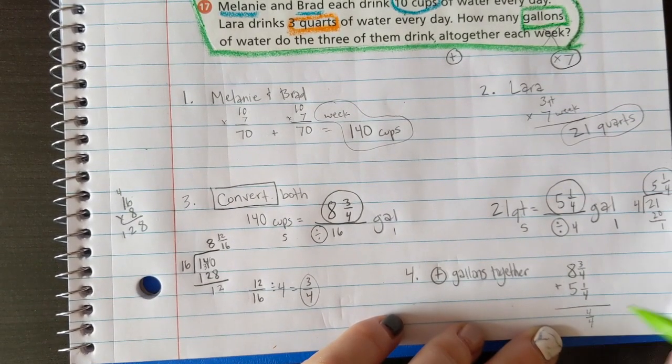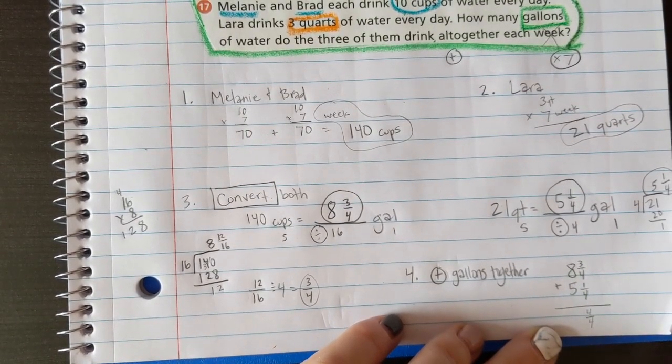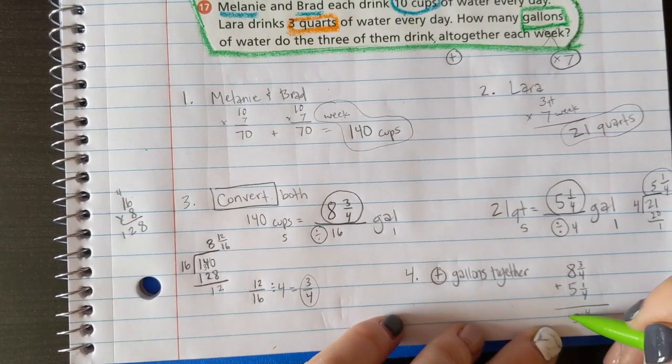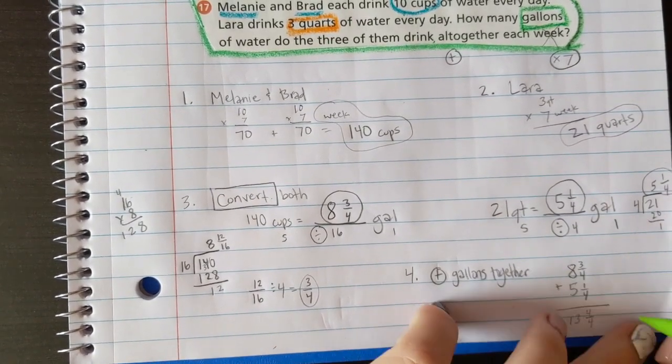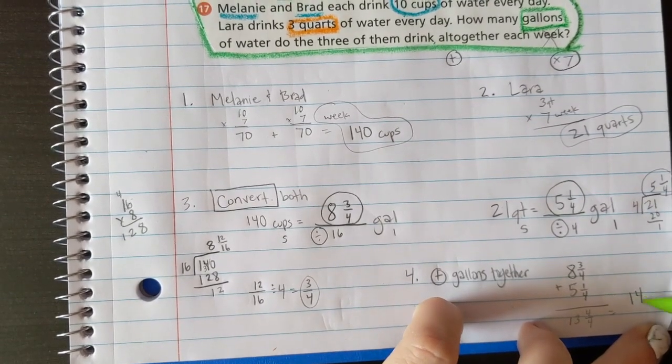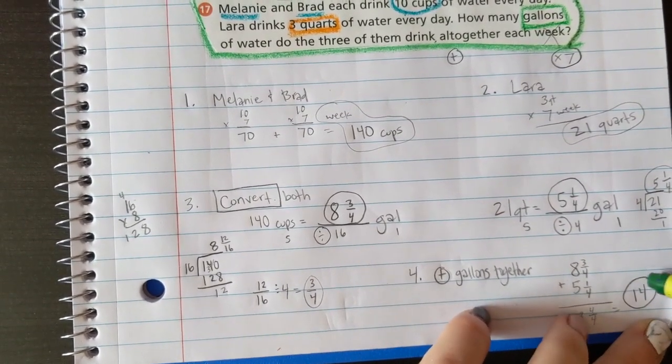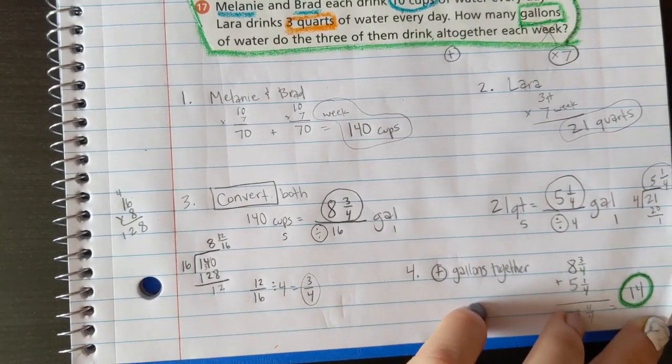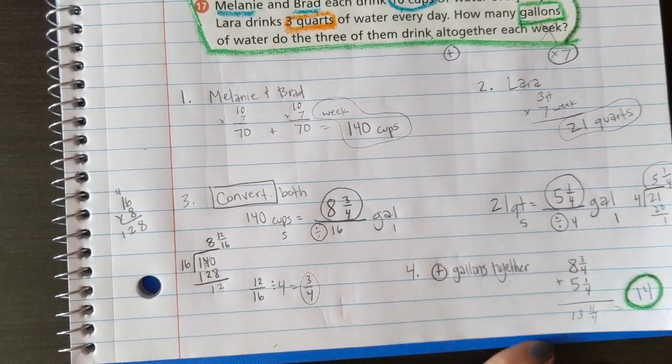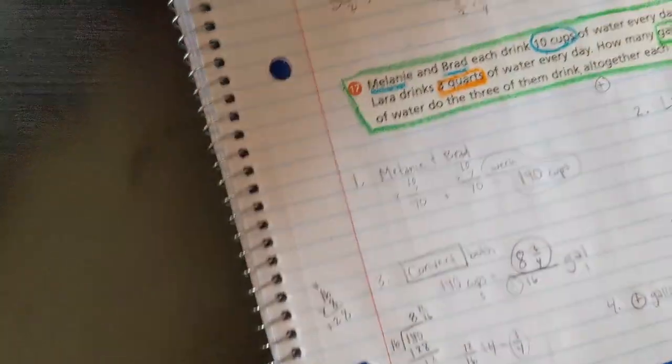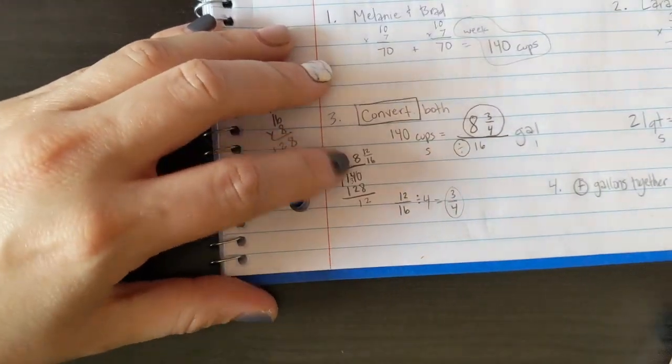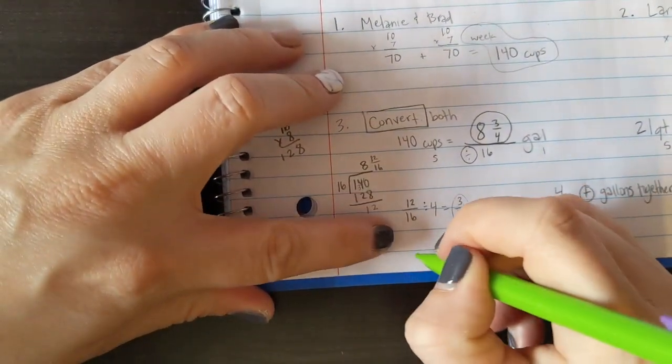8 plus 5 is 13. And what is 13 and 4/4? 14. My final answer in gallons, that's why it's green, is 14. So I'm gonna put that in a final sentence down here.